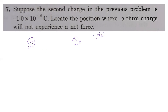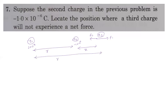If the third charge q3 is positive, the second charge exerts an attractive force f2 toward it, and the first charge exerts a repulsive force f1. Since q2 is smaller, q3 must be placed near q2 for the forces to balance. So the third charge is at distance x from q2, and distance r+x from q1.